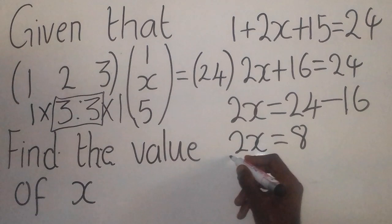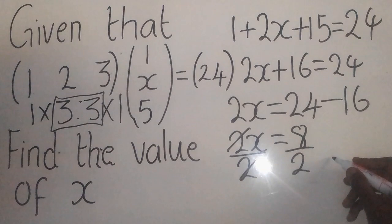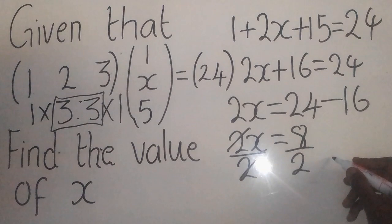To find the value for x, we divide by 2. Here by 2, cancel out. 2 into 8 is going to give me 4. This simply means x equals 4.